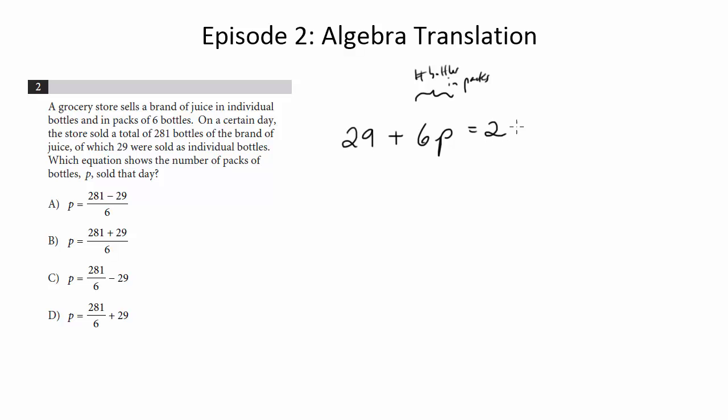This sum should be 281, right? Your 29 individuals plus whatever's in your packs should add up to your total, which is 281.